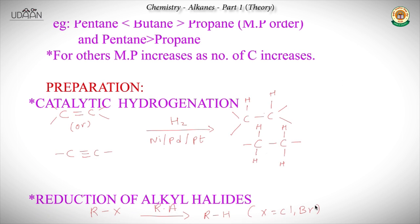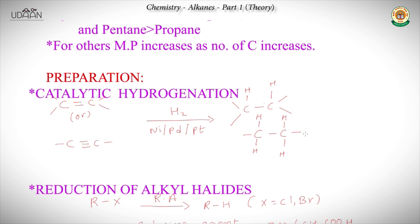In catalytic hydrogenation, we start with an alkene or an alkyne. When these are made to react with hydrogen in the presence of metals like nickel, palladium, or platinum, we get an alkane. For example, in the double bond of an alkene, one bond is broken and H atoms are attached. For an alkyne, two bonds are broken and hydrogens are attached to give an alkane. We'll discuss the mechanism in more detail later.